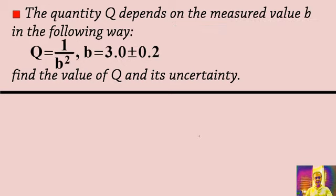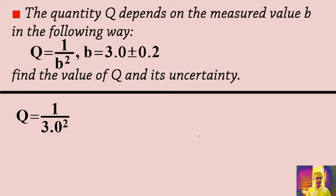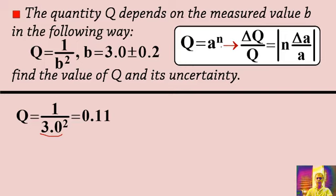Let's go ahead with another example. The quantity q depends on the measured value b in the following way: q is equal to 1 over b squared, the inverse of b squared. b is equal to 3.0 plus or minus 0.2. Find the value of q and its uncertainty. The first step is finding the value: q is equal to 1 over 3 to the power of 2. Using a calculator, you get 0.11, taking only two significant figures because b has only two significant figures. Now, q can be rewritten as b to the power of negative 2, so n is negative 2.